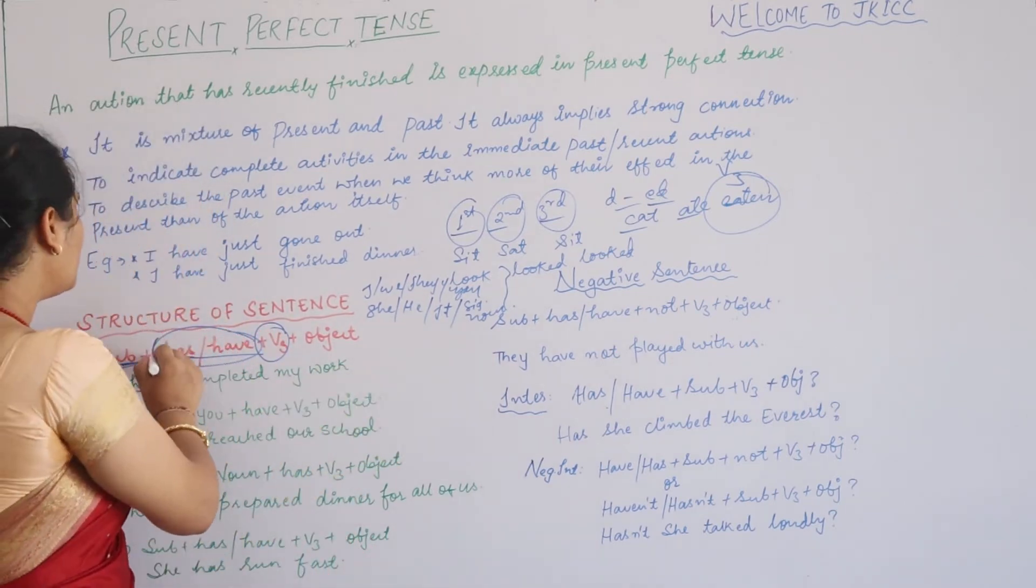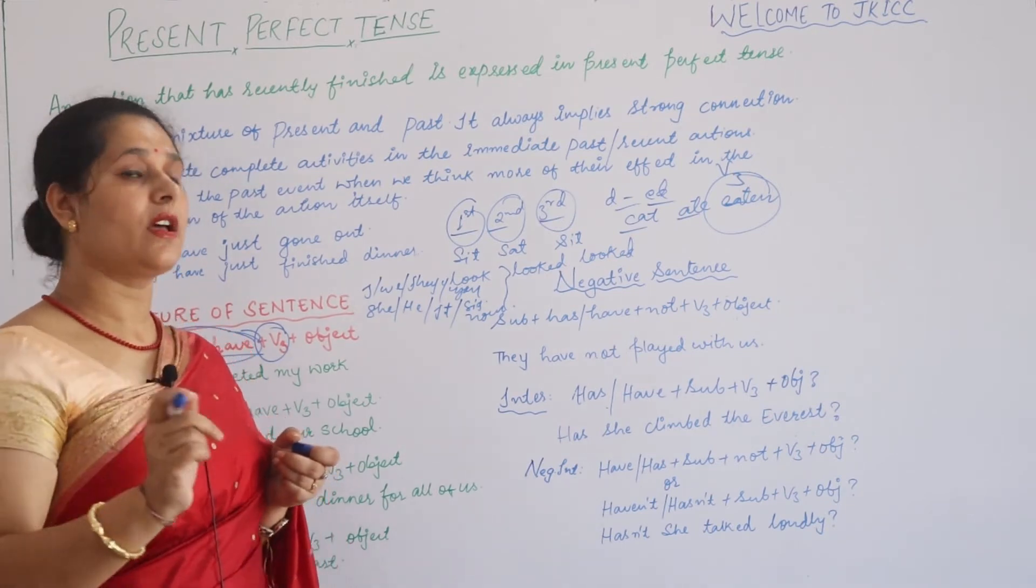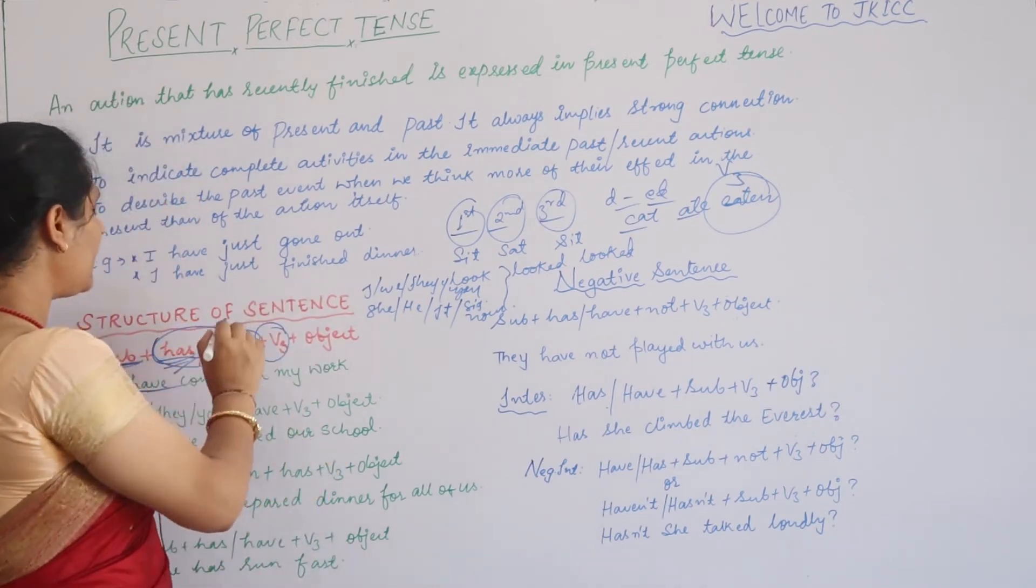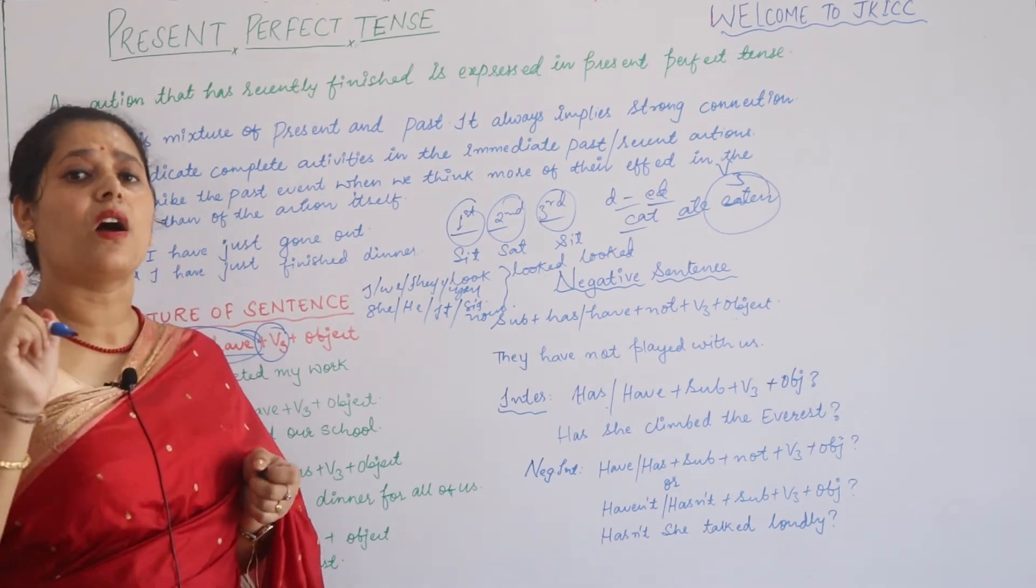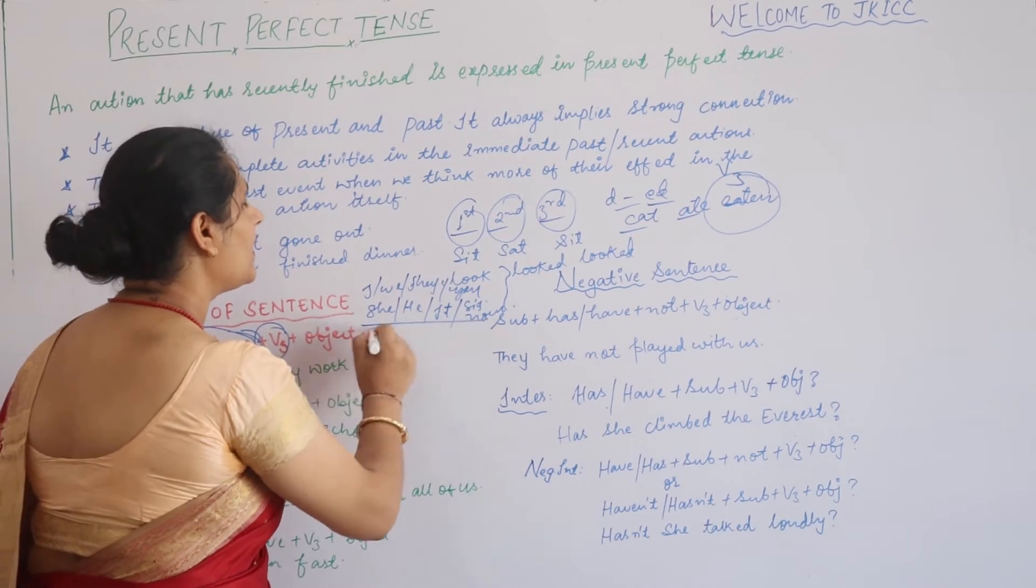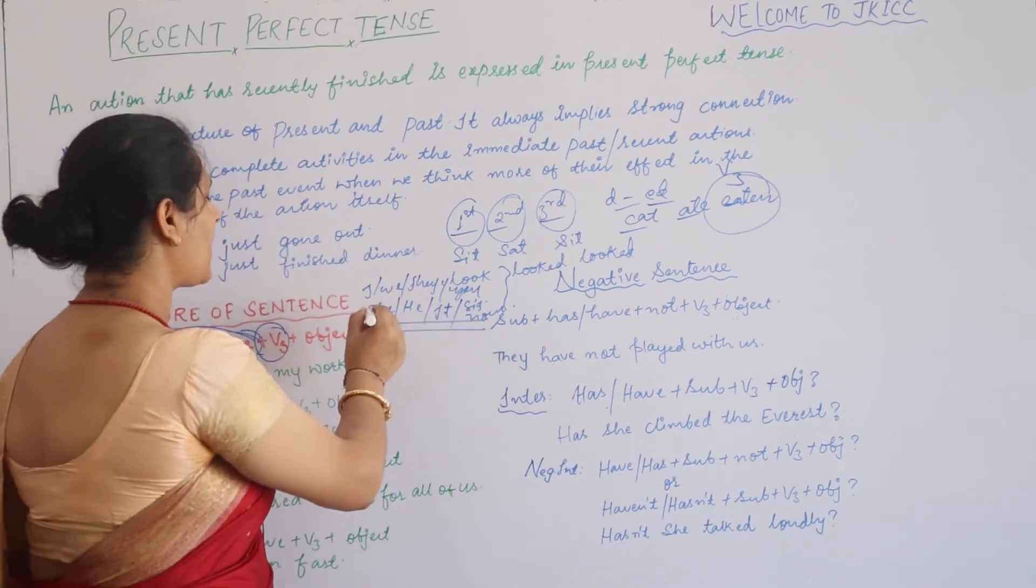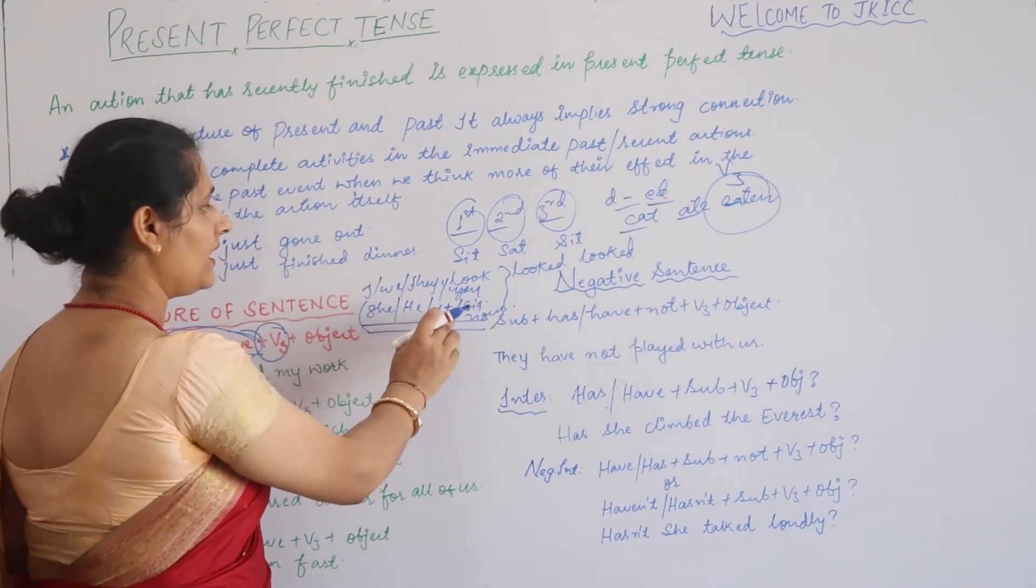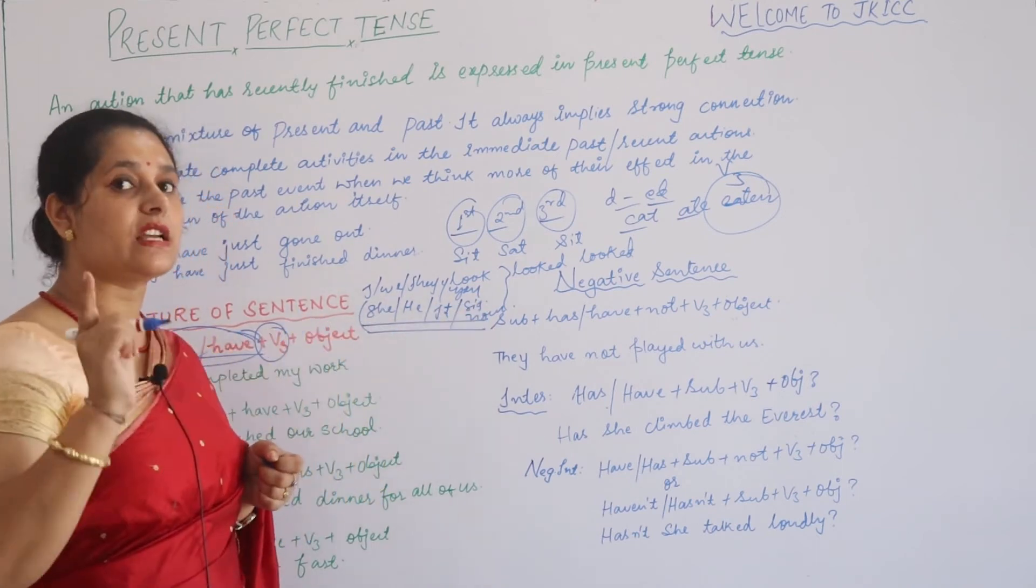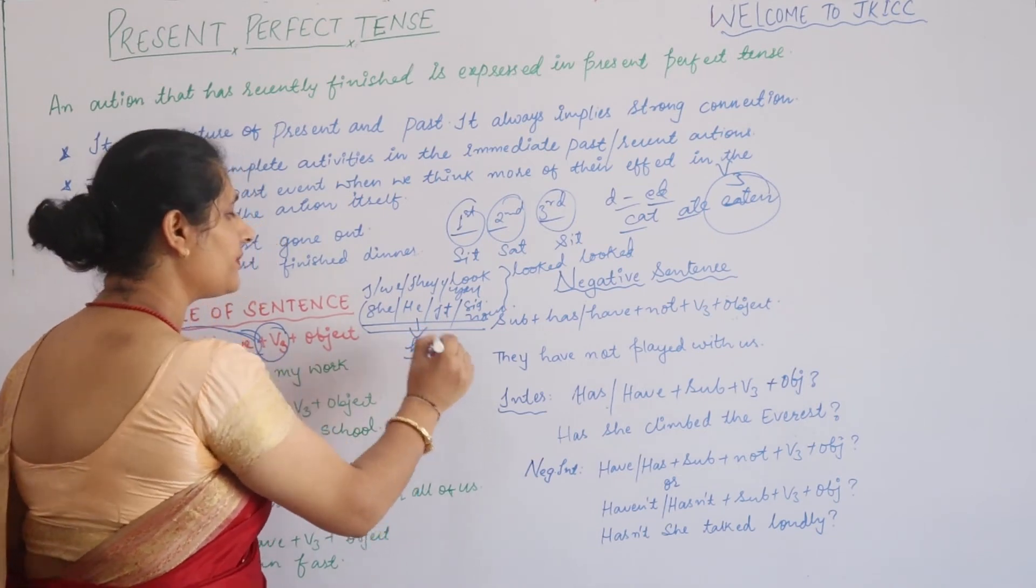Now, there are two auxiliary verbs here. One is has and the other is have. Now where do we use it? We use has here where we have a singular subject, which I have told you in the first video about simple present tense: she, he, it, or singular nouns - wherever you have these, you have to put has there.